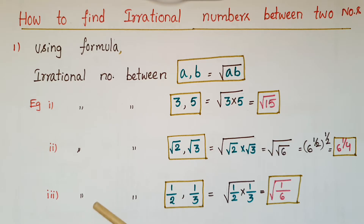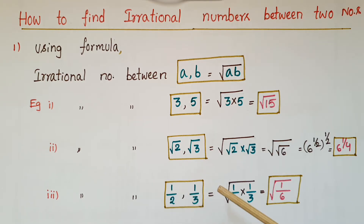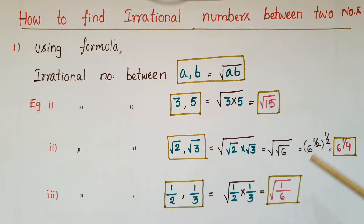Next example: the irrational number between 1 by 2 and 1 by 3 is equal to root of (1 by 2 into 1 by 3), that is equal to root of 1 by 6.